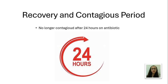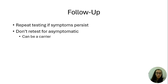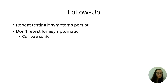In terms of recovery and the contagious period, as a general rule of thumb, after 24 hours on antibiotics, the person is no longer contagious. For follow-up, we don't need to repeat the swab or repeat testing after completing antibiotics — we assume the bacteria was eradicated if symptoms have resolved. If symptoms persist, we would re-swab and treat again if positive, typically with broader beta-lactamase coverage, such as Augmentin. However, if someone is asymptomatic and symptoms have improved, you do not want to retest them, because if they're a chronic strep carrier, retesting would put them on antibiotics unnecessarily.